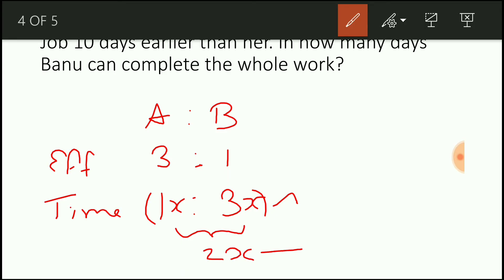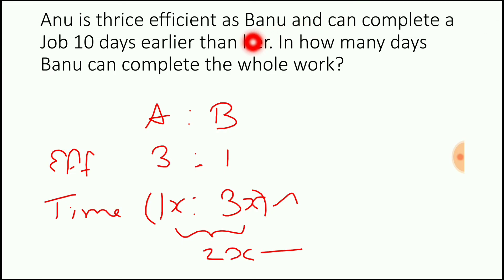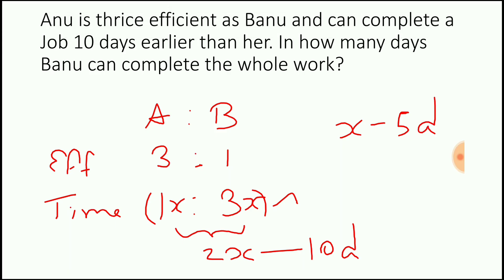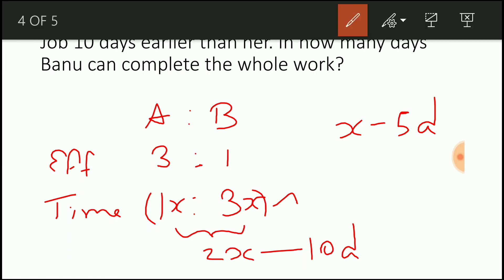So here this 2x is nothing but how many days? So here the difference between Anu and Banu is 10 days. So if 2 parts is 10 days, what is 1 part? 1 part is 5 days. So here the question is, in how many days Banu can complete the whole work? So Banu will complete the whole work in 3 parts. So 3 times 5 is 15 days. I hope that you understood the concept.